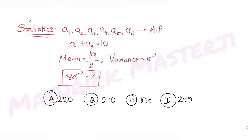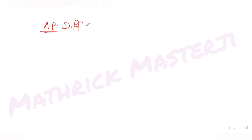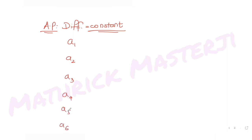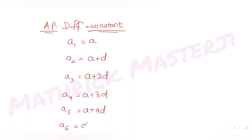We need to figure out which answer choice is correct. For the solution, we know the given sequence is in arithmetic progression, where the difference between consecutive terms is a constant value. So if I write out the first six terms from a1 to a6: the first term is a, second is a+d, third is a+2d, fourth is a+3d, fifth is a+4d, and the last term is a+5d.